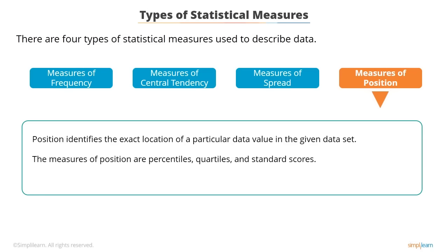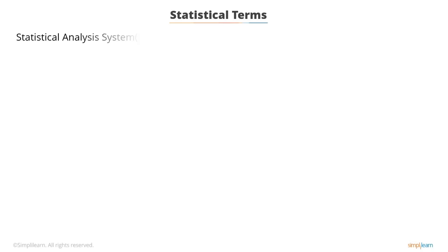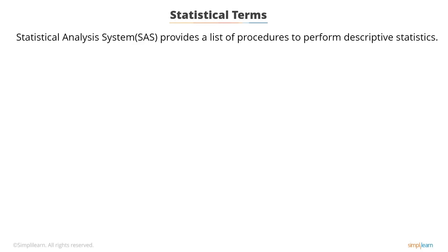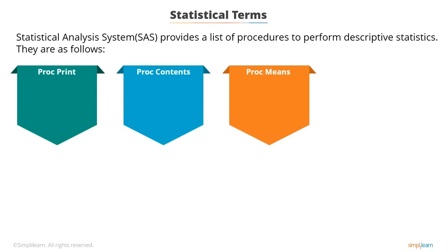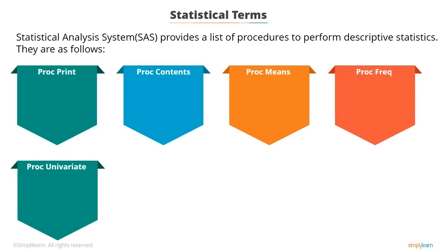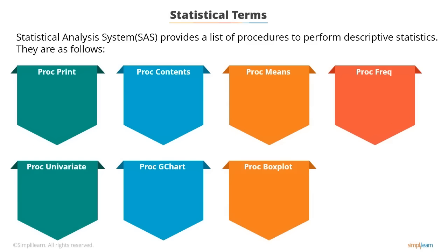The Statistical Analysis System (SAS) provides a list of procedures to perform descriptive statistics. They are: PROC PRINT, PROC CONTENTS, PROC MEANS, PROC FREQUENCY, PROC UNIVARIATE, PROC GCHART, PROC BOXPLOT, and PROC GPLOT. PROC PRINT prints all the variables in a SAS data set. PROC CONTENTS describes the structure of a data set.